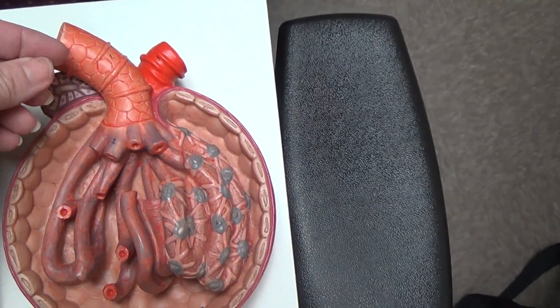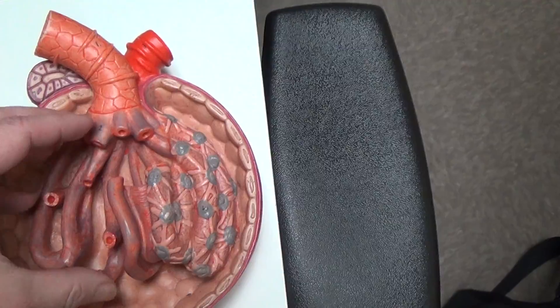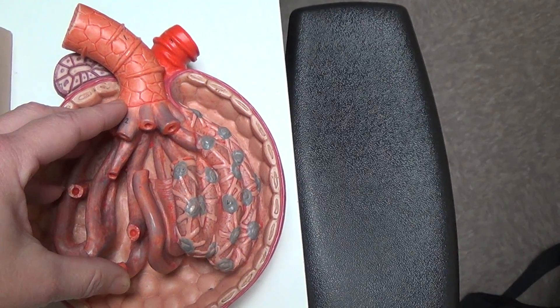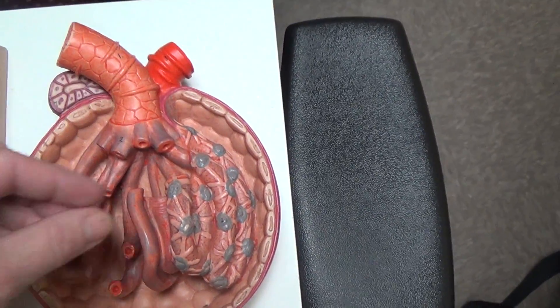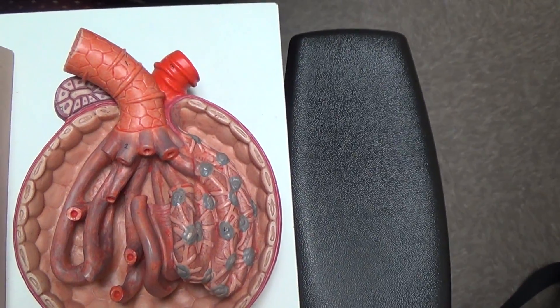So blood enters the afferent arterial, goes to the specialized capillary bed called the glomerulus. And what is left will leave via the efferent arterial.